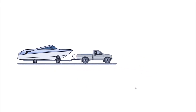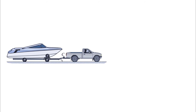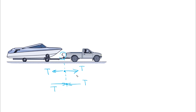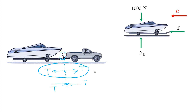Let's draw the free body diagrams for both the boat and the truck. Since the question asks for the coupling force at point C, we have to include the interaction between the truck and the boat. At point C, we will have an equal and opposite reaction. We can draw the reactions pointing outward or inward — it doesn't matter, as both cases lead to the same physical answer.